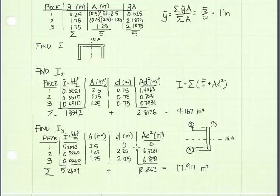And the areas for pieces 1, 2, and 3 stay the same. D values, notice that the d value is 0 for piece 1. That's because its centroid falls right on the neutral axis. So that d is 0. For pieces 2 and 3,